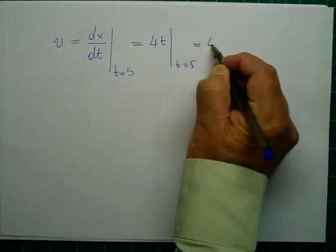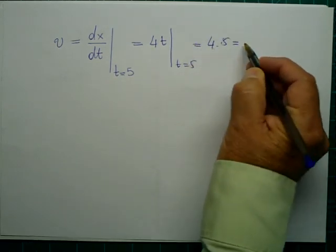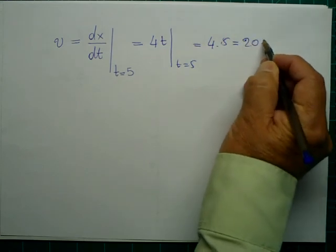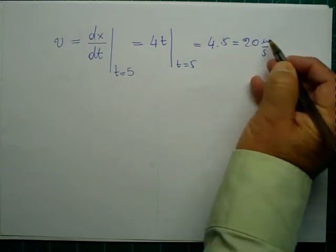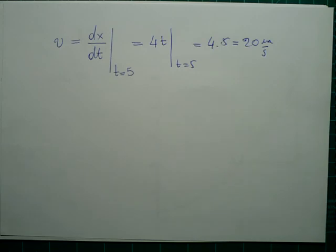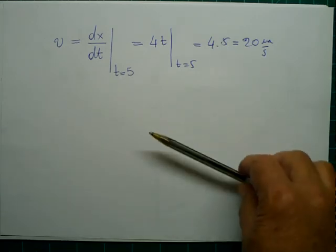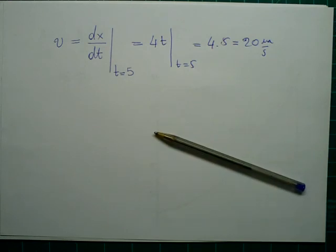Which is 4 times 5, and we get 20 meters per second. So we get the instantaneous velocity at t equals 5 seconds. Thank you for watching this video.